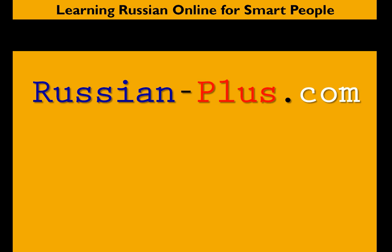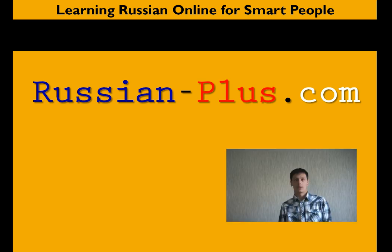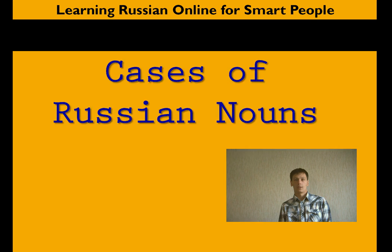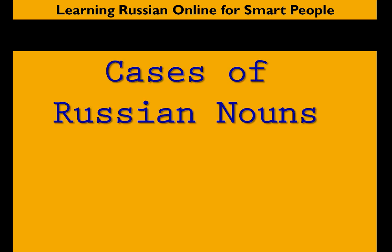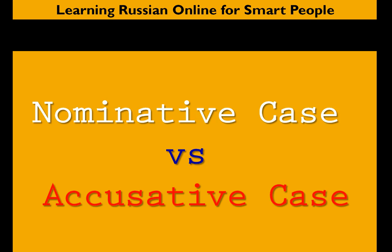Hello everybody, this is Vyacheslav and another lesson from Russian-plus.com. Now in this lesson, we'll talk about cases of the Russian nouns. The two particular cases that we will consider in this lesson are the nominative case and the accusative case. I've been recently asked several times about the differences between the two because in many forms they coincide and in many forms they are different. So let's take a look at what makes them so similar.